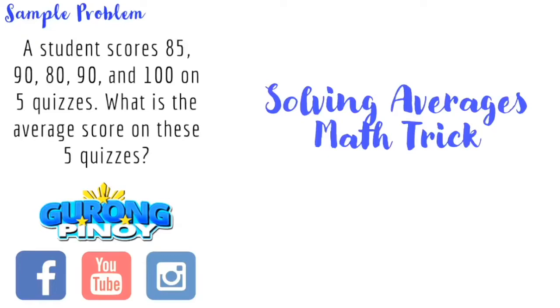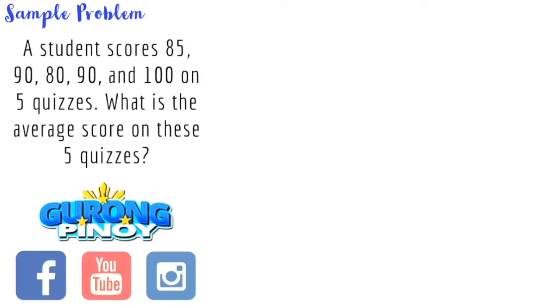So we start with the first sample problem. A student scores 85, 90, 80, 90, and 100 on five quizzes. What is the average score on these five quizzes? Now this is the usual average problem that we have in math. For us to solve this, we use the formula for average or the mean, which is the sum of the terms divided by the number of terms.